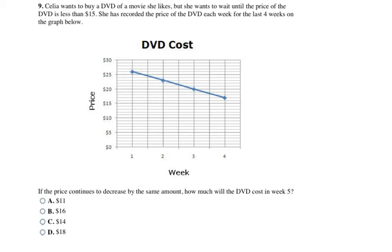Here's a line graph. The question says, Cecilia wants to buy a DVD, a movie she likes, but she waits until the price of the DVD is less than $15. She has recorded the price of the DVD each week for the last four weeks in the graph below. At week one, the price of the DVD was $26. I'm going to write down these numbers so it's easier to see the pattern. At week two, the price was $23. At week three, the price was $20. At week four, the price was $17.